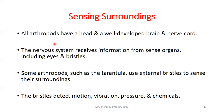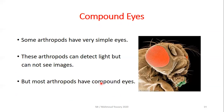All arthropods have a head with a well-developed brain and a nerve cord. The nervous system receives information from sense organs including eyes and bristles. Bristles are small stiff hairs — some arthropods, such as the tarantula, use external bristles to sense their surroundings. Bristles detect motion, vibration, pressure, and chemicals.